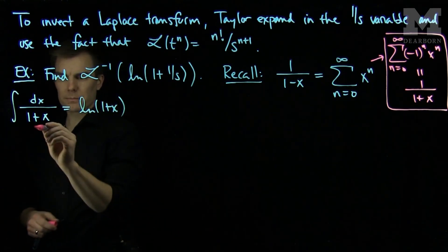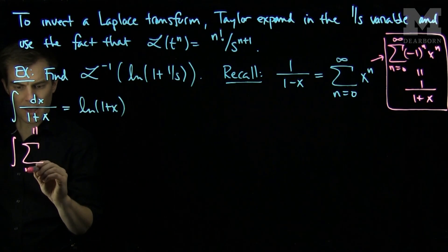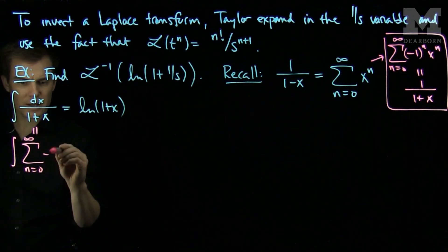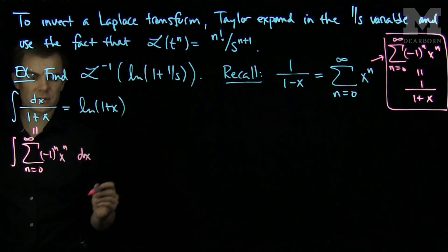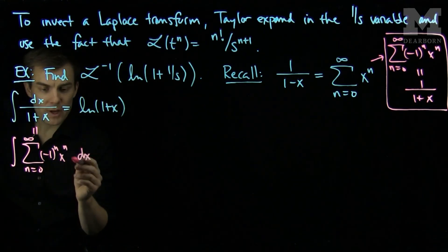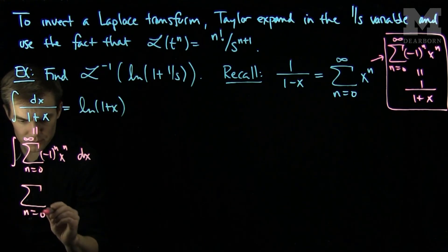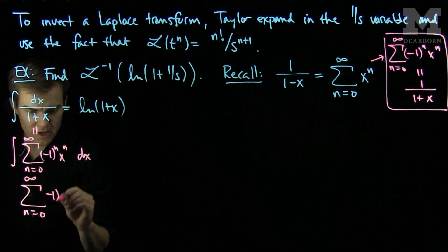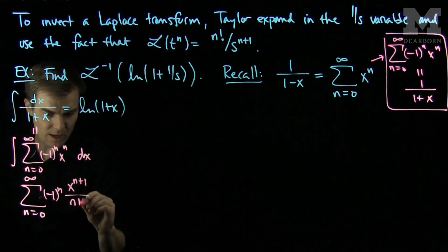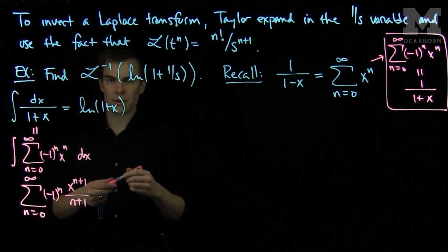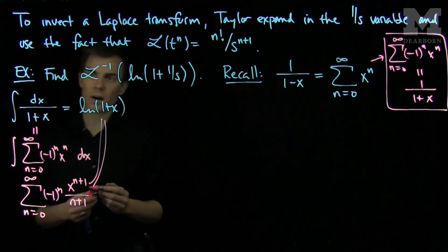My integral will now become the integral of the sum, n goes from 0 to infinity, of negative 1 to the n times x to the n, dx. Integrating term by term gives x to the n plus 1 over n plus 1, which is the Taylor expansion for the log of 1 plus x.